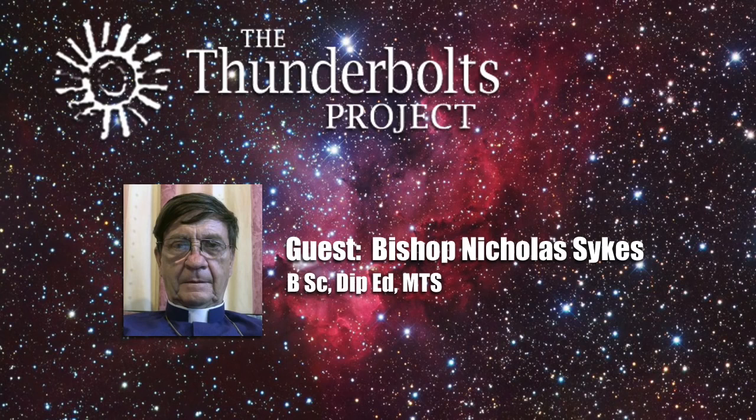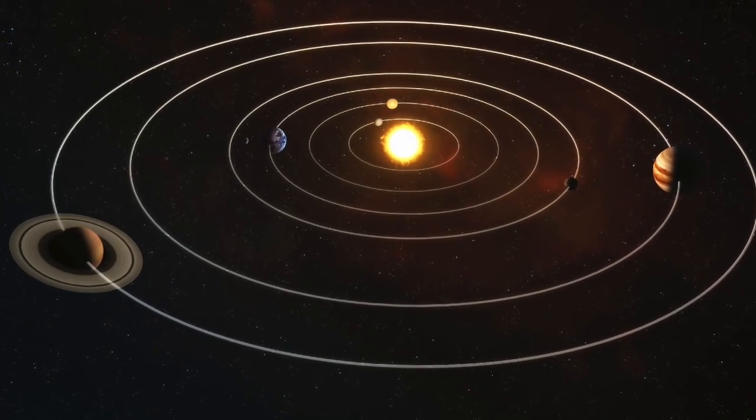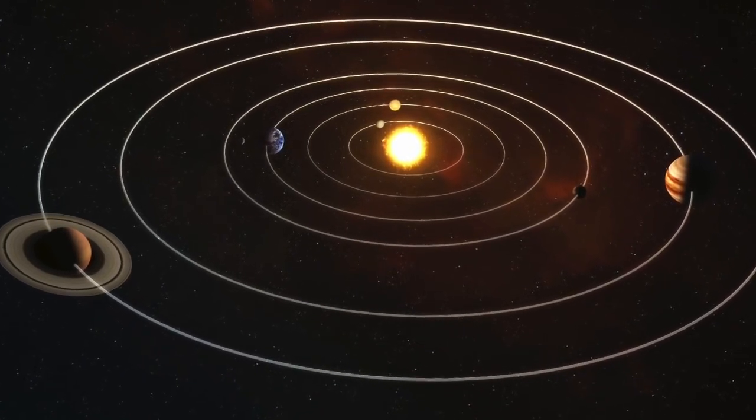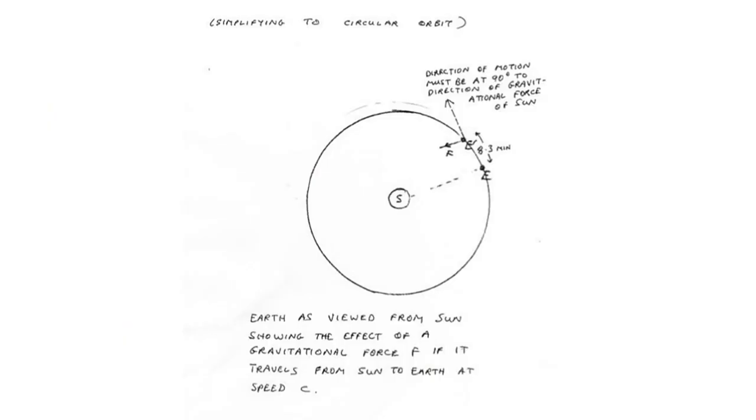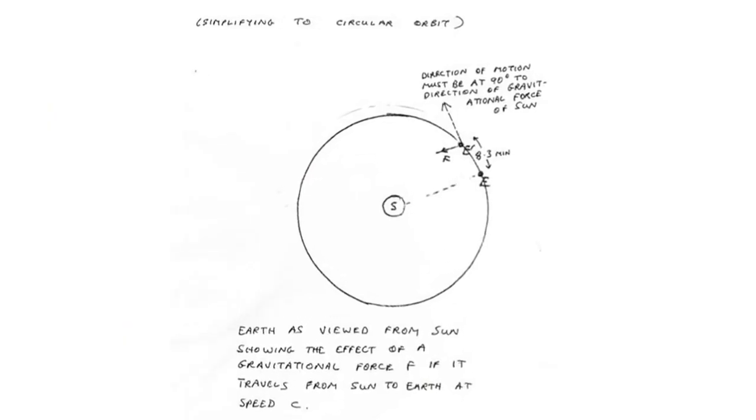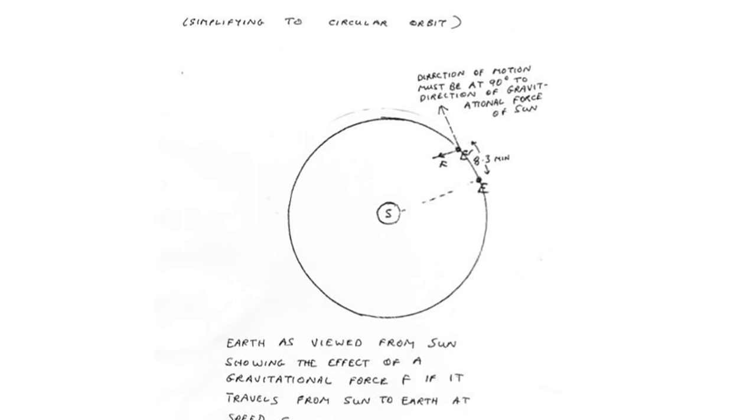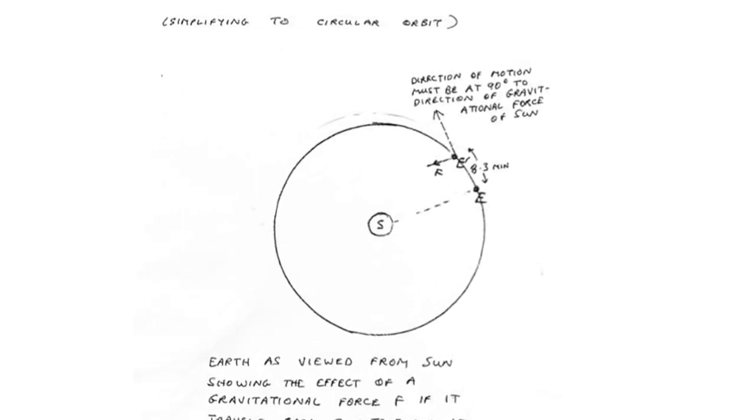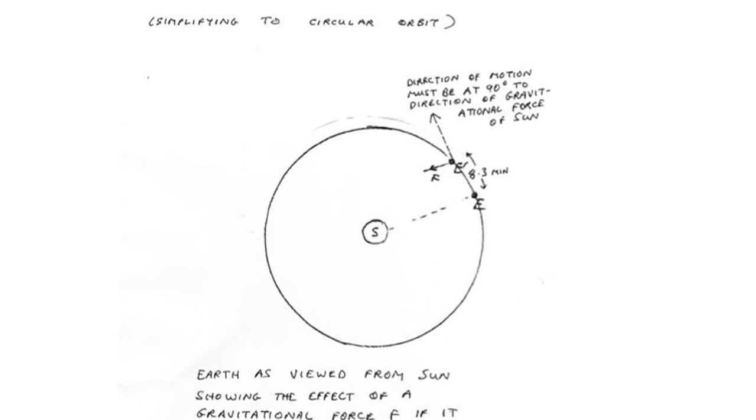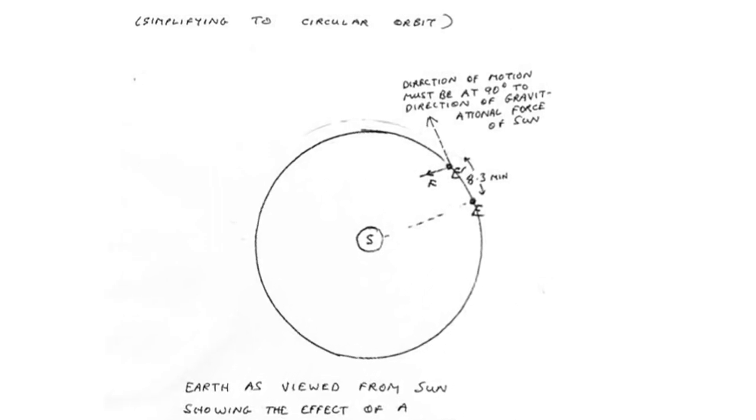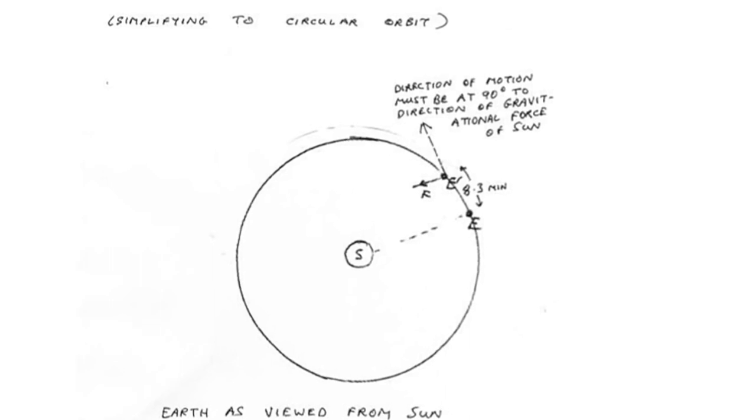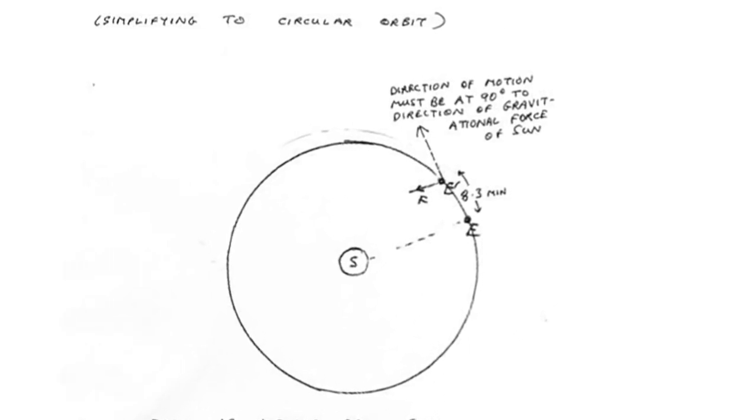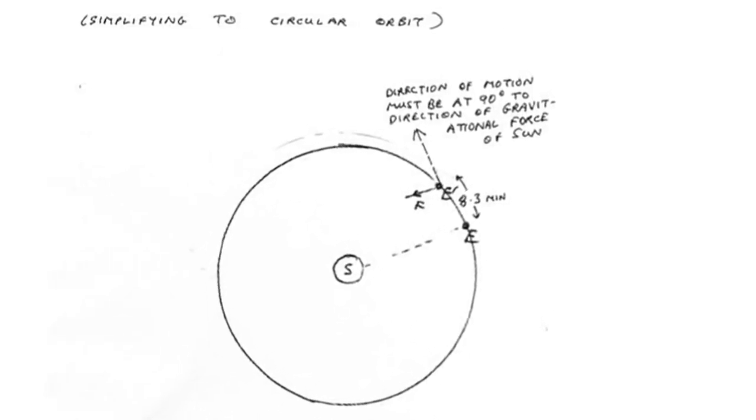Contradiction number 1. Let us regard the planetary orbits of the Solar System as circular, which we may do without prejudice to the argument. A centripetal force upon the orbiting Earth must be orthogonal to the motion of the planet. However, the gravitational force transmitted from the Sun to the Earth at the speed of light will, when it reaches the Earth, be displaced from the path it would have taken if the force had operated instantaneously.